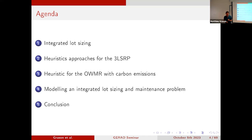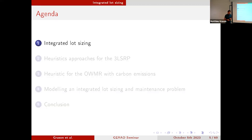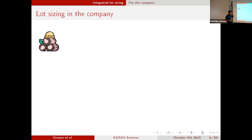For integrated lot sizing problems, we can have the point of view of the company or of the supply chain. Let's consider first that we are within a company — a manufacturing company. We want to produce some items starting from raw materials, which go through machines to produce end items.